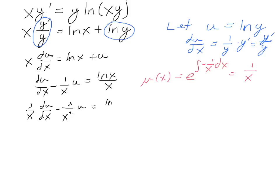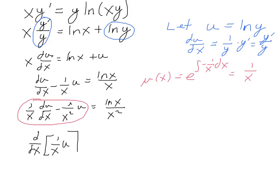This equals the natural log of x over x squared. This should be recognizable as a product rule, so writing it as a product rule I get d/dx of 1 over x times u is equal to the natural log of x over x squared.